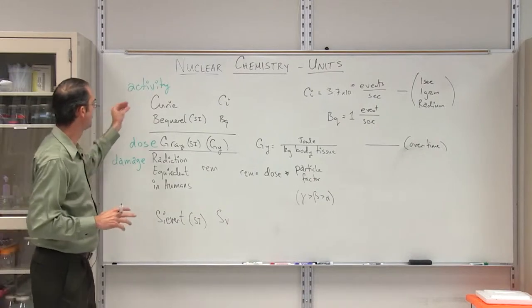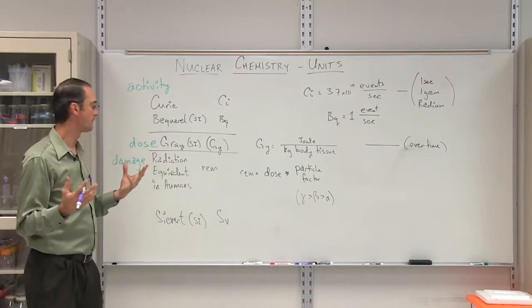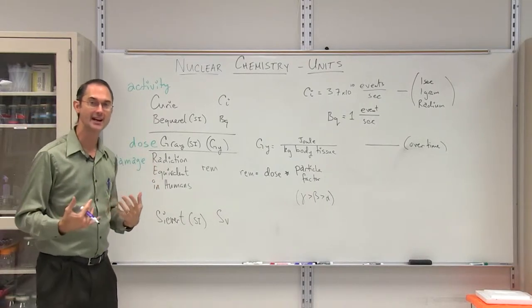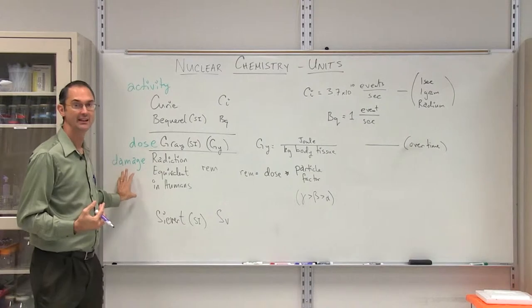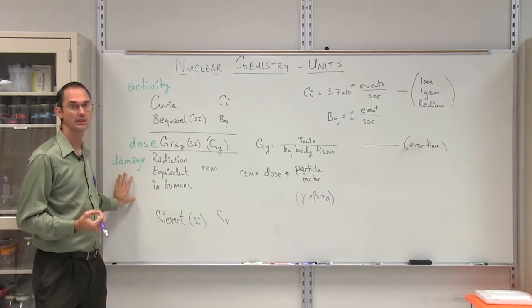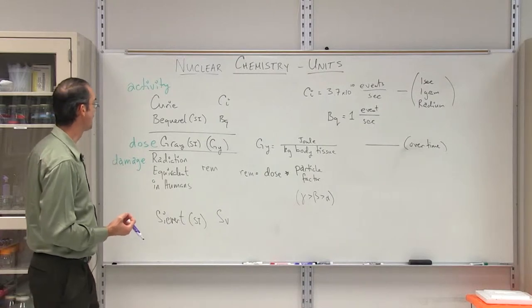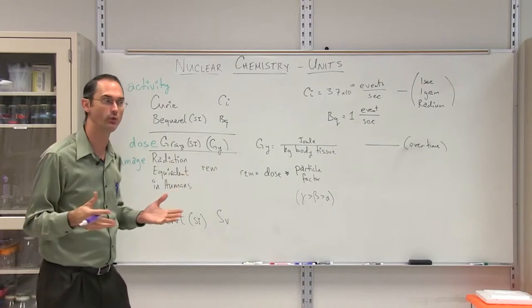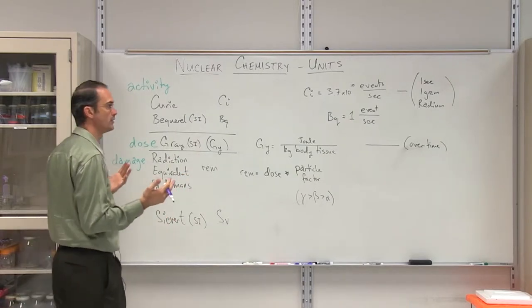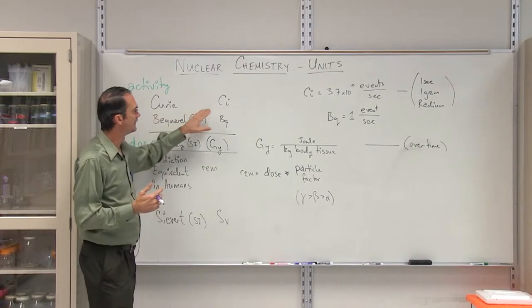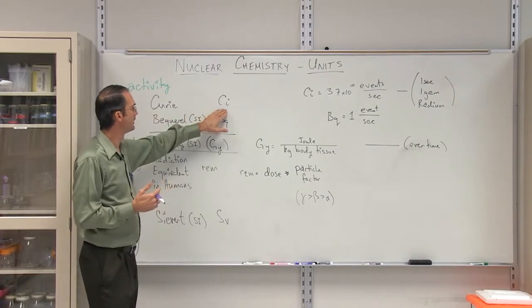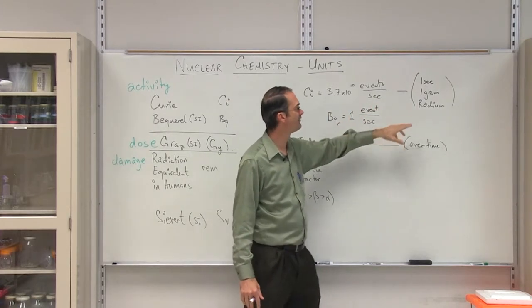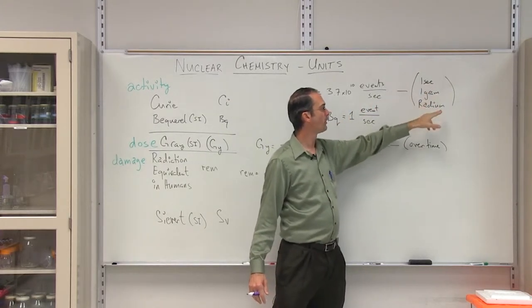First of all, we have some based upon activity, which is how much radiation is going around. The next one has to do with dose, which is how much a biological entity actually receives. And then finally the damage that occurs, primarily the damage that will occur inside of humans. So first of all for activity, which is how many popcorn popping do we have occurring for nuclear activity? First of all, we have the Curie. The Curie has a unit abbreviation of CI, and it's based upon the number of pops or the number of decays you have during one second for one gram of radium.